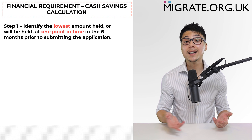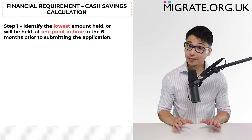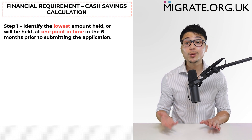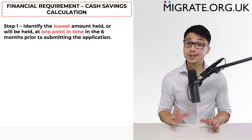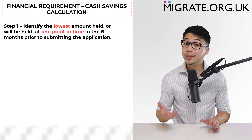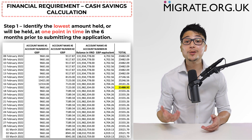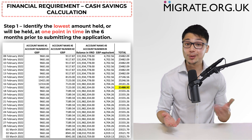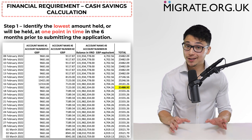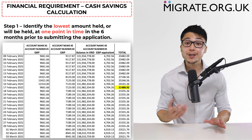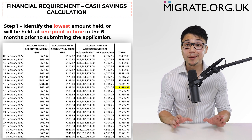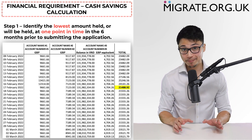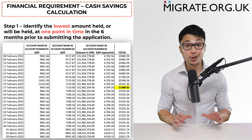Step 1: identify the lowest amount of cash savings held — or that will be held — at one point in time in the six months before submitting the application. If you're relying on cash savings held in only one bank account, simply identify the lowest figure as seen in the statements. If, however, you're relying on cash savings held over numerous accounts, if it is not clear that the total amount held is above the required amount, we would sometimes recommend creating an Excel sheet to help the Home Office caseworker identify what this figure is. Most banks allow statements to be exported into Excel format, which will save you a ton of time.